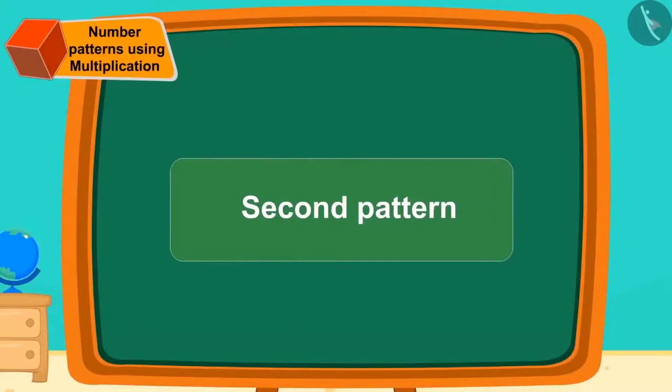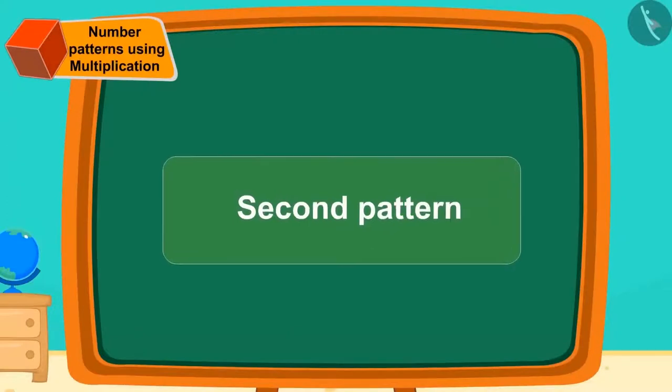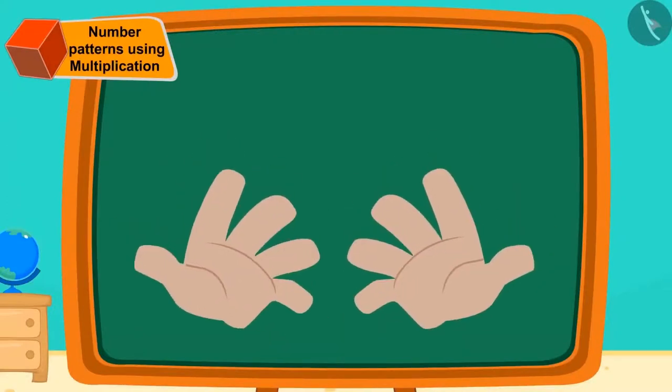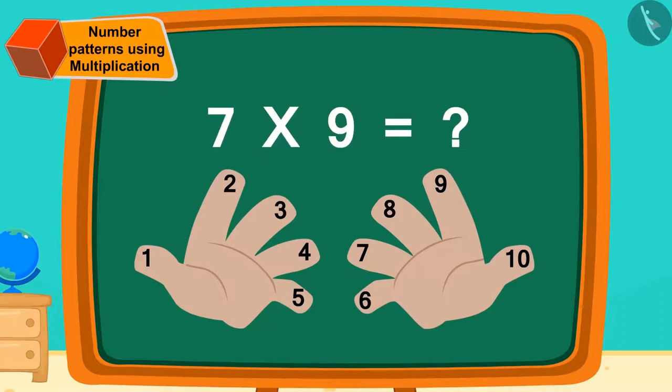We can easily multiply any multiplication of 9 on our fingers in another way. Suppose we have to do 7 times 9. We have to find the answer of 7 times 9 here. So, we will bend our 7th finger in this way.